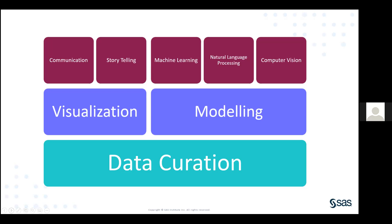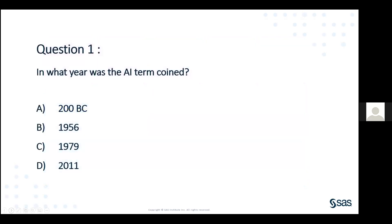Before we move on to the next session, it's time for our very first question. Please remember to make sure that you send your answer to me in private chat — that way not everyone can see your answers and copy you. The question is: in what year was the term AI coined? I'm also going to send this into the chat. I'm going to hand over to Melissa.